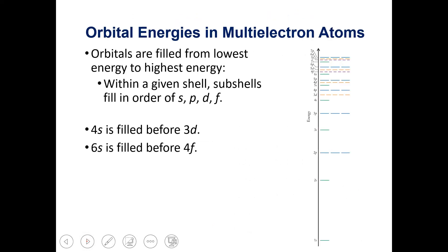When filling orbitals, we fill them from lowest to highest energy, so within a given shell that usually goes s, p, d, then f. However, there are a few exceptions: 3d is actually slightly higher energy than 4s, so the 4s shell gets filled before 3d, and the 6s shell gets filled before 4f.